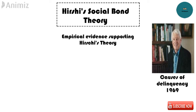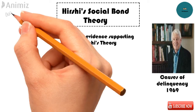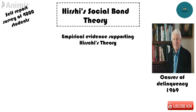Hirschi found empirical evidence for his Social Bond Theory. He administered a detailed self-report survey to a sample of more than 4,000 junior and senior high school students to test his hypothesis — whether bonds that attach a person to society have an impact on a person's deviance and criminality. He found the following things in support of his hypothesis.